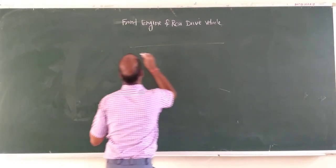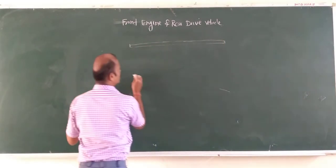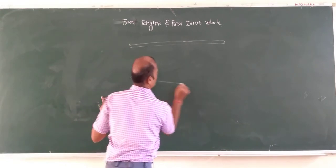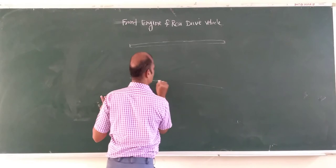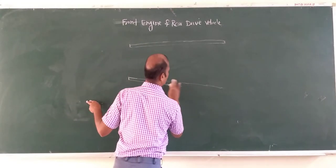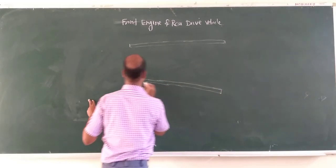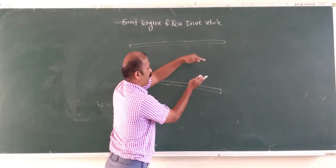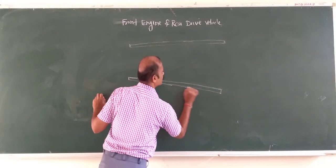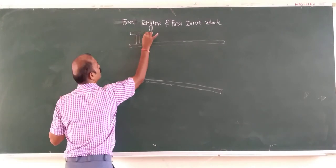The diagram for a front engine rear drive vehicle is drawn showing the vehicle chassis. Here I am drawing the vehicle chassis first.